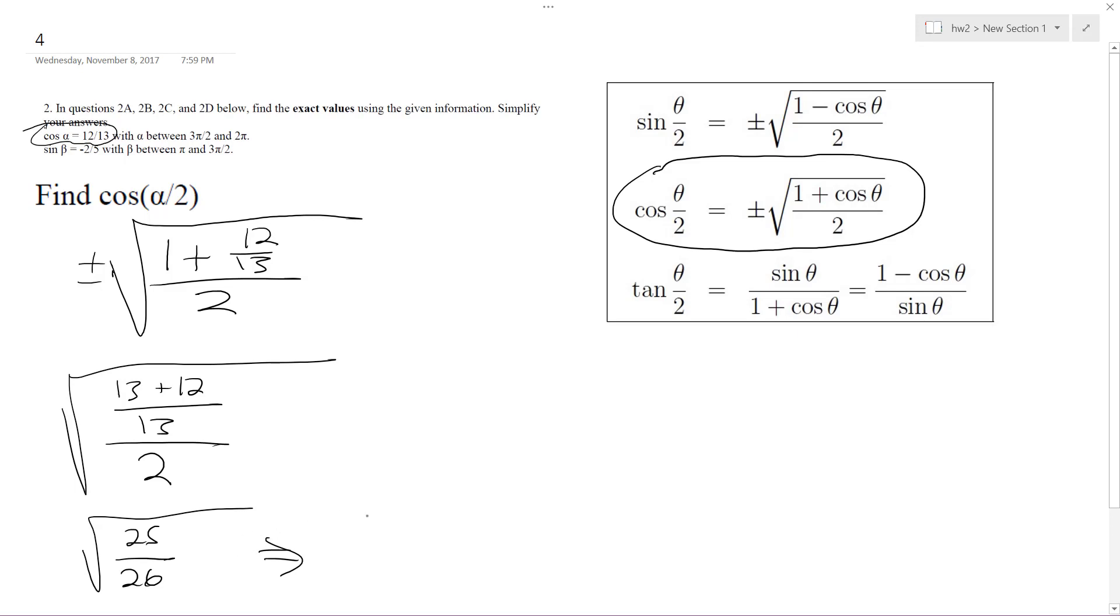We can't simplify that further, so what we end up getting is plus or minus 5 over the square root of 26, or rationalizing the denominator, 5 root 26 over 26.